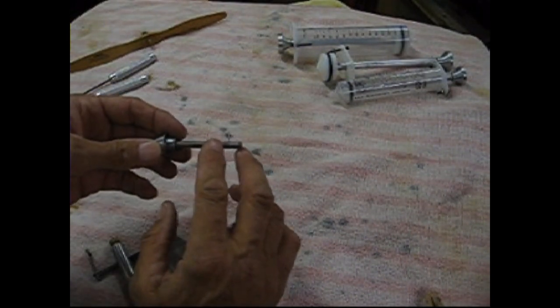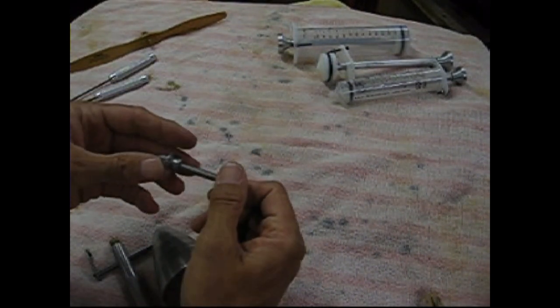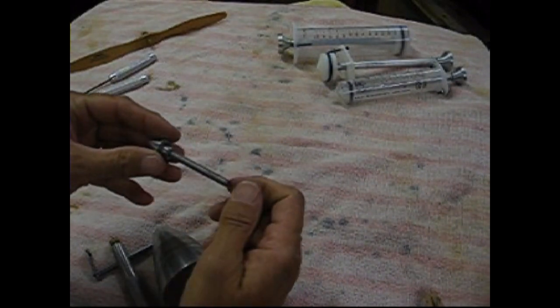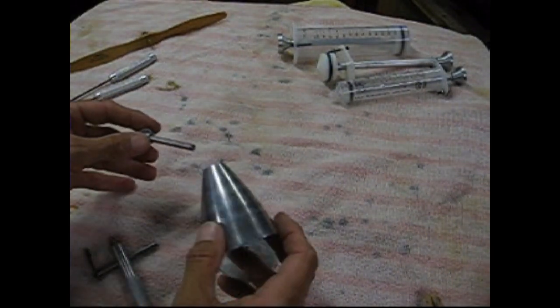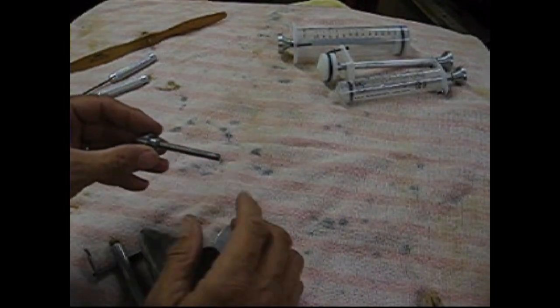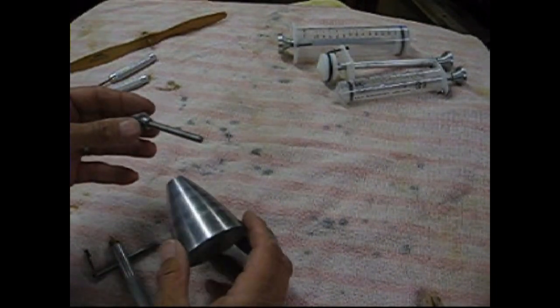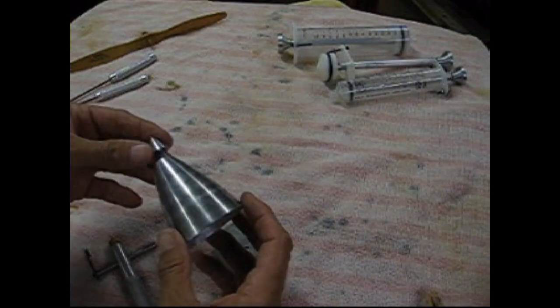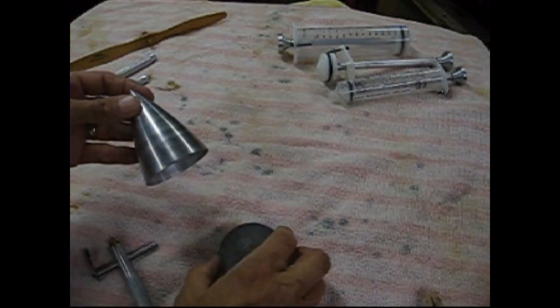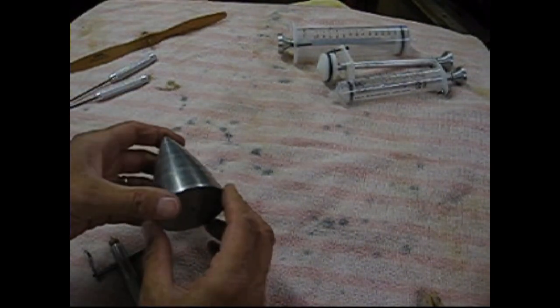We also have available lengths of 6061 aluminum threaded 1/4-28 for the vintage Vico and Froome spinners as a replacement item. This is getting kind of hard to find, but we do have that available now. And if you always, of course, if you have any questions, give us a call.